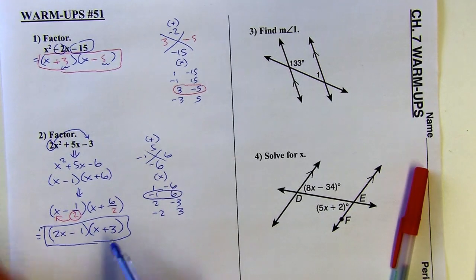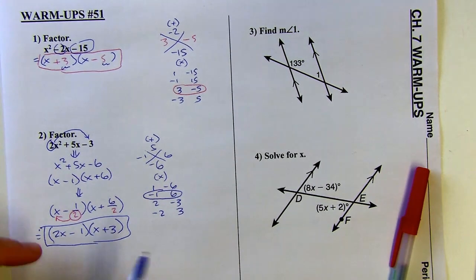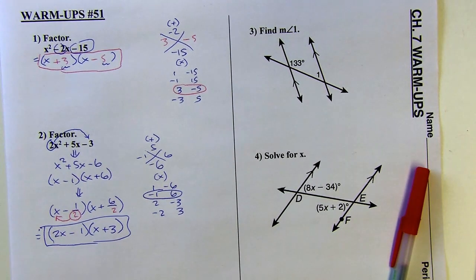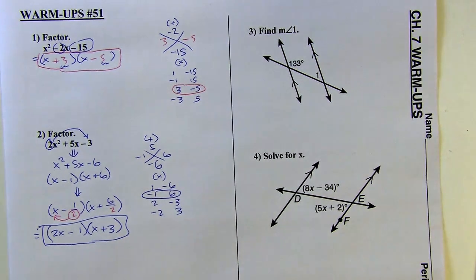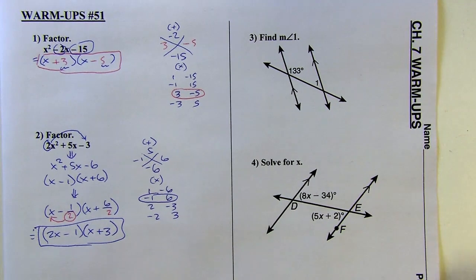And you could test this by multiplying it back together. It should give you two x squared plus five x minus three. You'd have to foil it to multiply it back together. And then going way back, I think, to chapter three, if I'm remembering correctly.